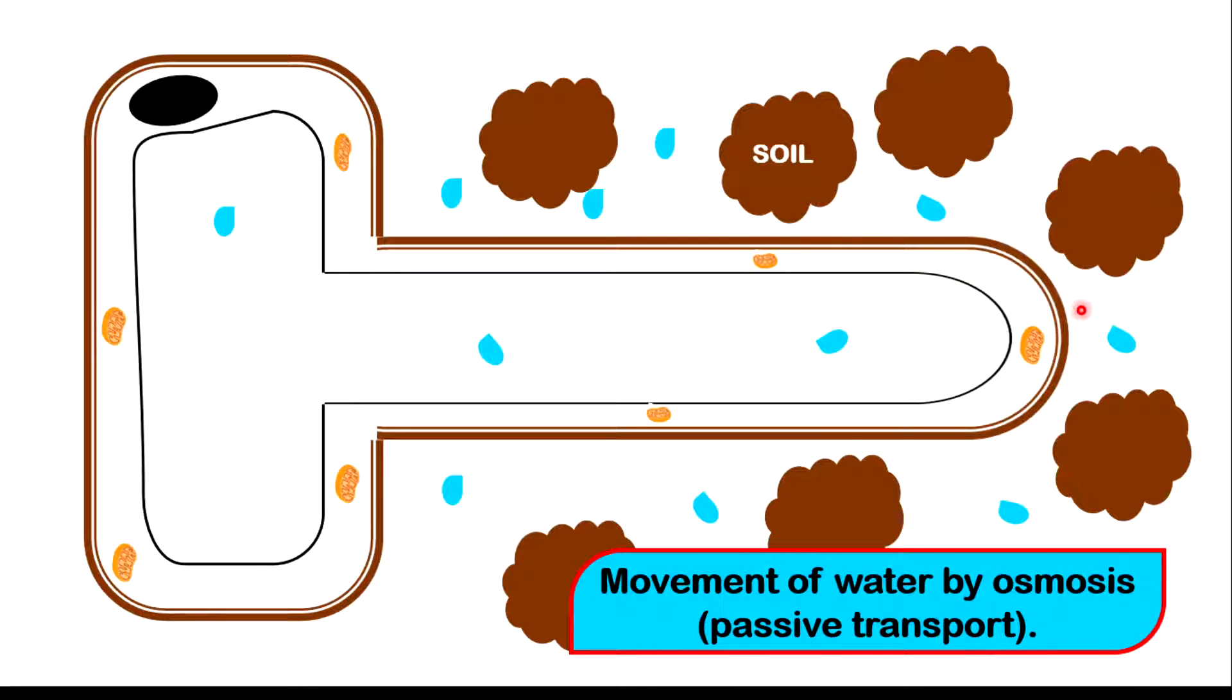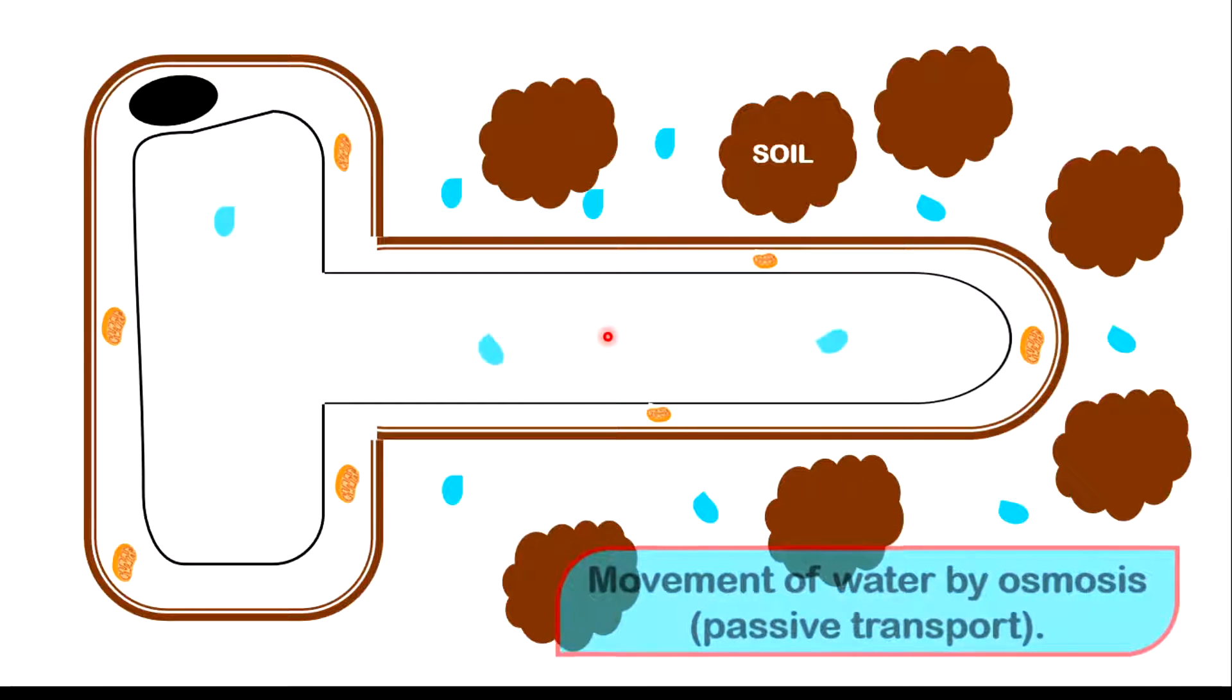If you notice, there are much more of them on the outside of the root hair cell compared to what are on the inside. Hence, the particles will move from the outside to the inside almost effortlessly to balance out the concentration.